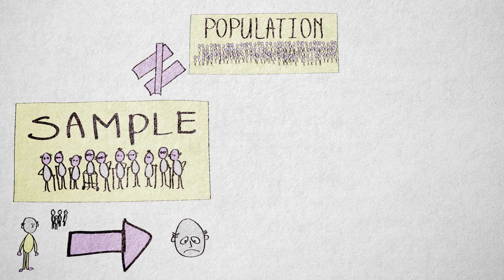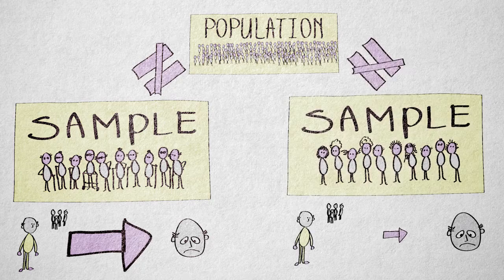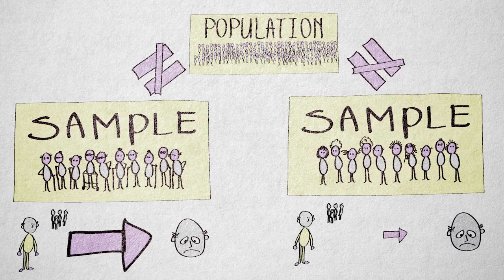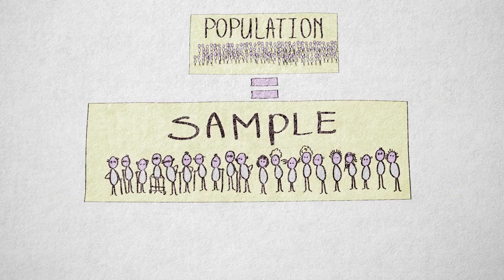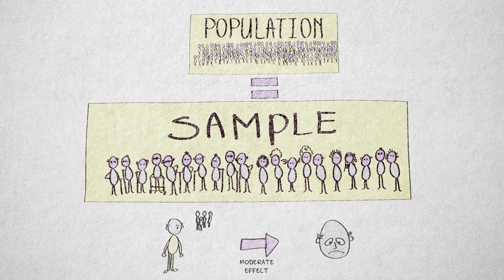The over-representation of a specific part of the population can weaken the study's external validity. Perhaps the strong effect of loneliness on depression is less apparent for young people. If our sample had been more representative of the entire population, we would have found a smaller effect.